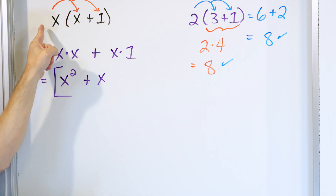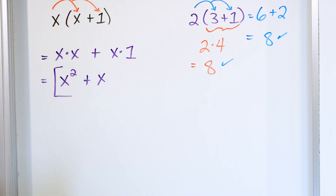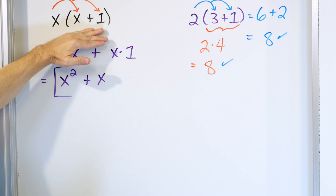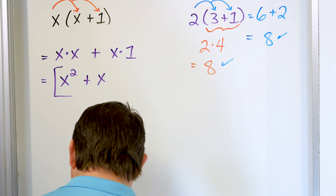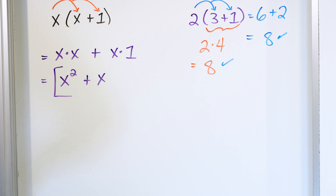That's why there's an equal sign there — this is considered a simpler form than the original. That's what we're doing: we're simplifying the expression.